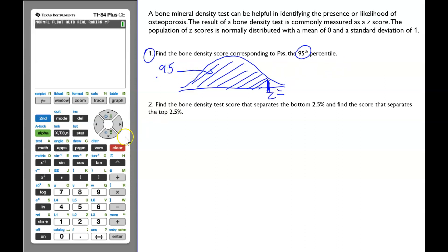In the graphing calculator, go to 2nd, VARS, down to invnorm, or you can type 3. The area to the left is 0.95. Mean is 0, standard deviation 1.